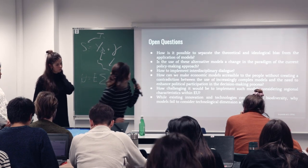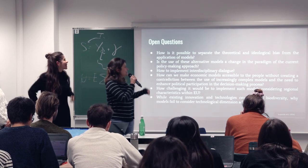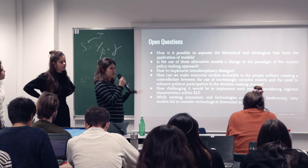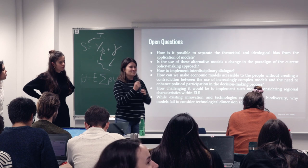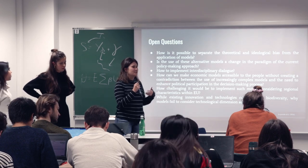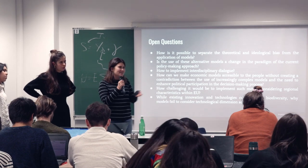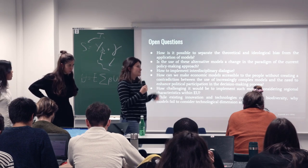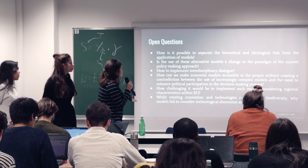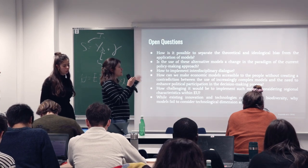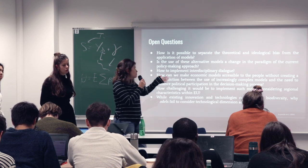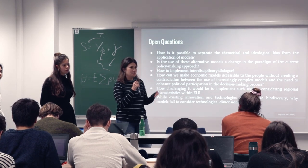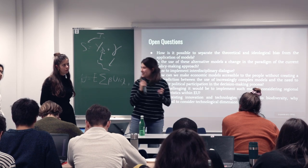For our questions to the speaker: how is it possible to separate the theoretical and ideological bias from the application of models? For a government to use these models for policy making, they must accept the ideological bias — including the possibility that their country may not grow, given the current climate situation, and will inevitably face a crisis. Another question: do these alternative models also imply a change in the paradigm of the policy making approach? If governments will take a more active role in development to promote the structural change that climate change requires?